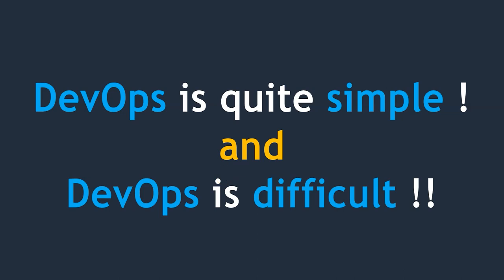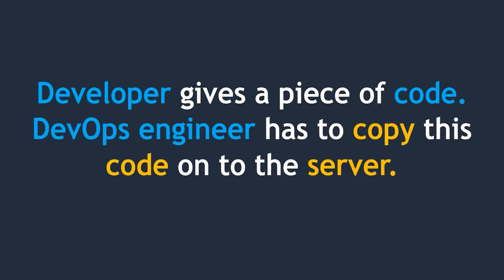DevOps is quite simple and it is difficult — you'll understand why by the end of this lecture. Let's see what a DevOps engineer does. A developer gives you a piece of code and DevOps engineers have to copy that code onto the server. But while the developer gives code to the DevOps engineer, he asks us to follow certain rules or conditions. Let's see those conditions.